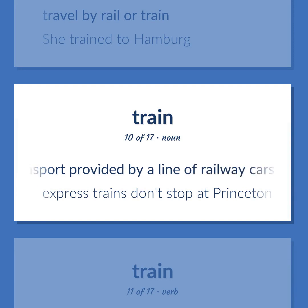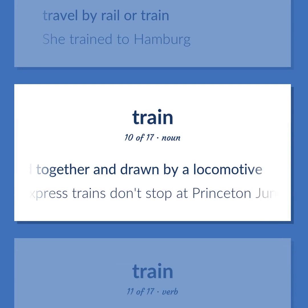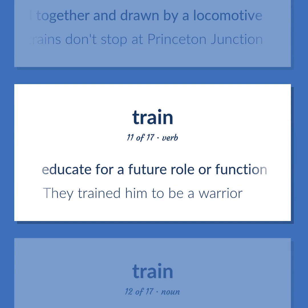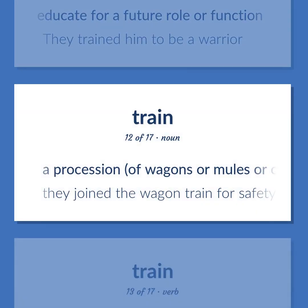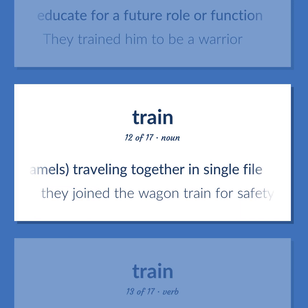Public transport provided by a line of railway cars coupled together and drawn by a locomotive. Express trains don't stop at Princeton Junction. Educate for a future role or function. They trained him to be a warrior. A procession of wagons or mules or camels traveling together in single file. They joined the wagon train for safety.